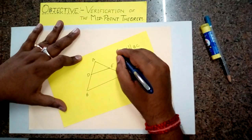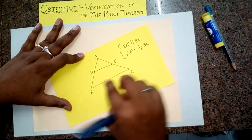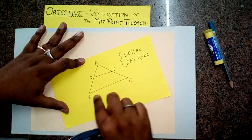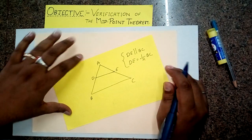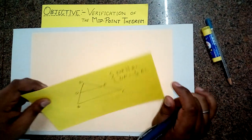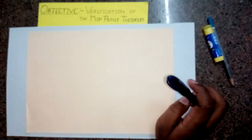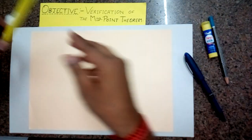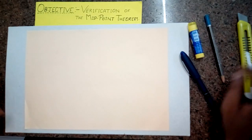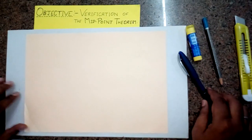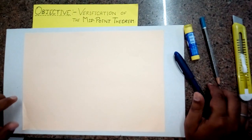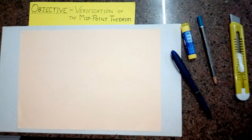Now we are going to verify that DE will be parallel to BC and DE will be half of BC by paper folding, cutting and pasting method. For this, we need: a cutter, ruler, pencil, pen, and a few sheets of colored paper — you can take any type of colors.